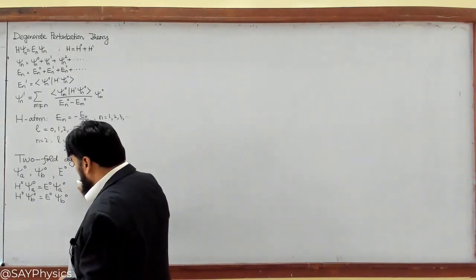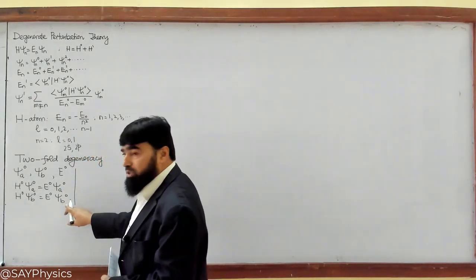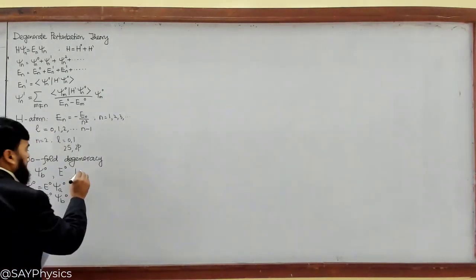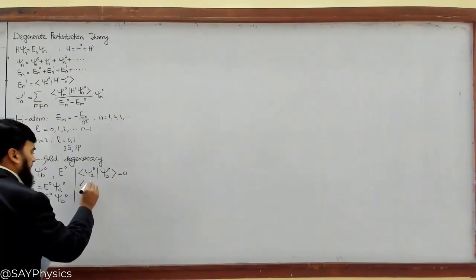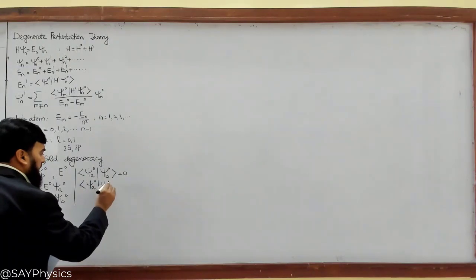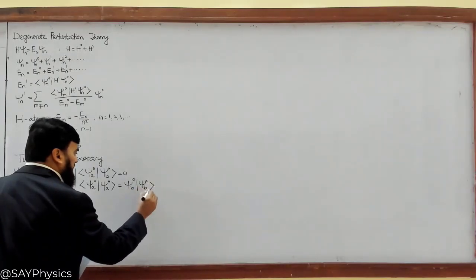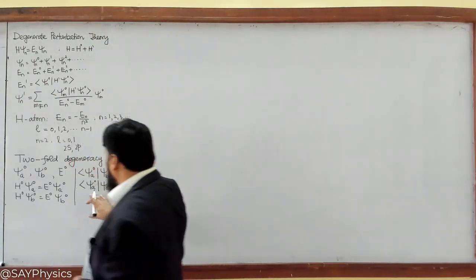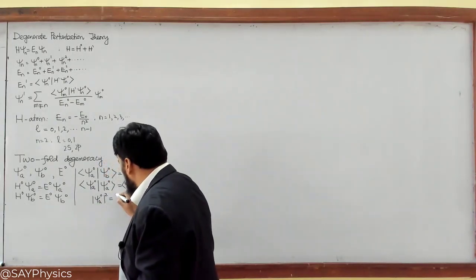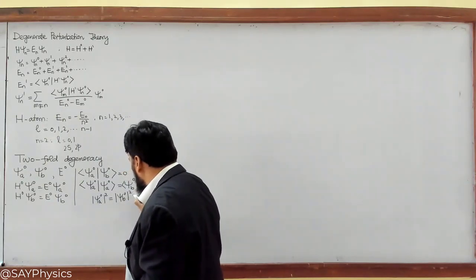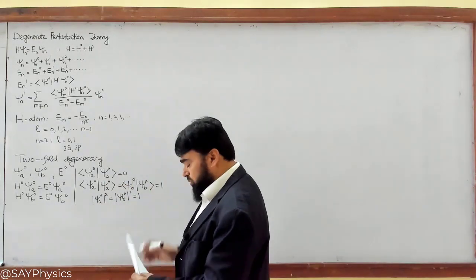We can write that H^0 psi_A^0 equals E^0 psi_A^0 and H^0 psi_B^0 equals E^0 psi_B^0, meaning both have the same energy. These states are orthonormal: the inner product psi_A^0 with psi_B^0 equals zero, while psi_A^0 with psi_A^0 and psi_B^0 with psi_B^0 each equal 1. So they are orthogonal and normalized.